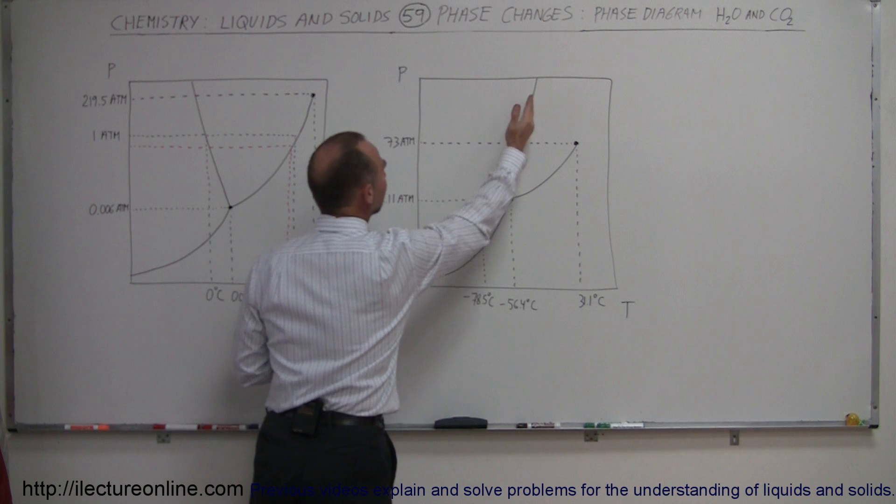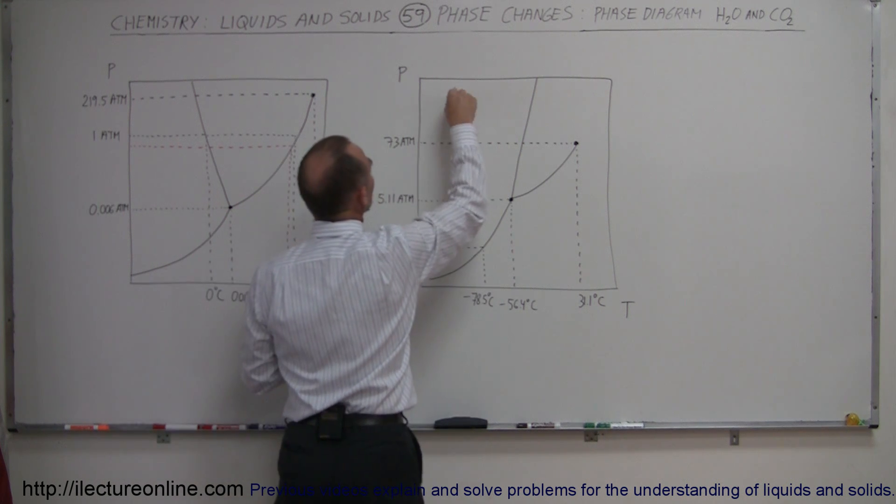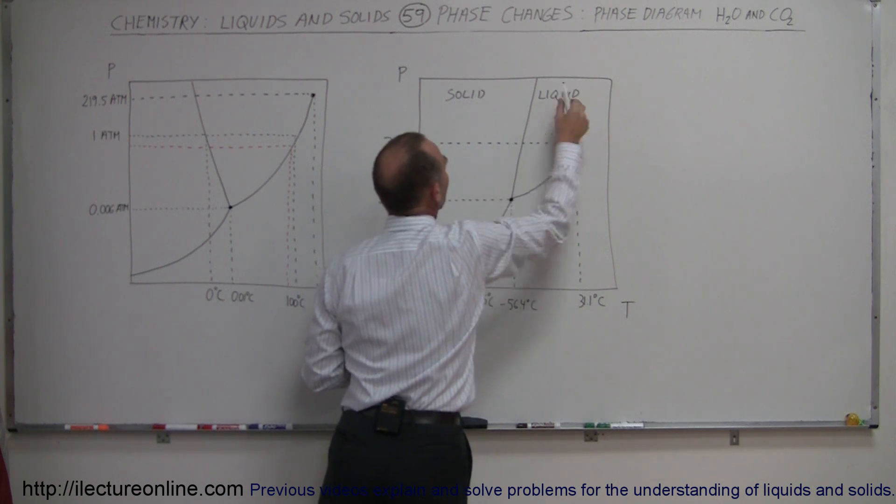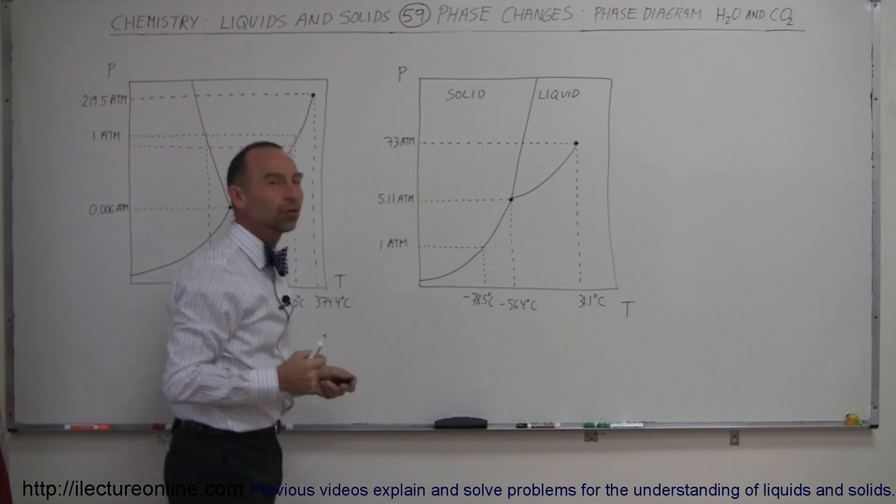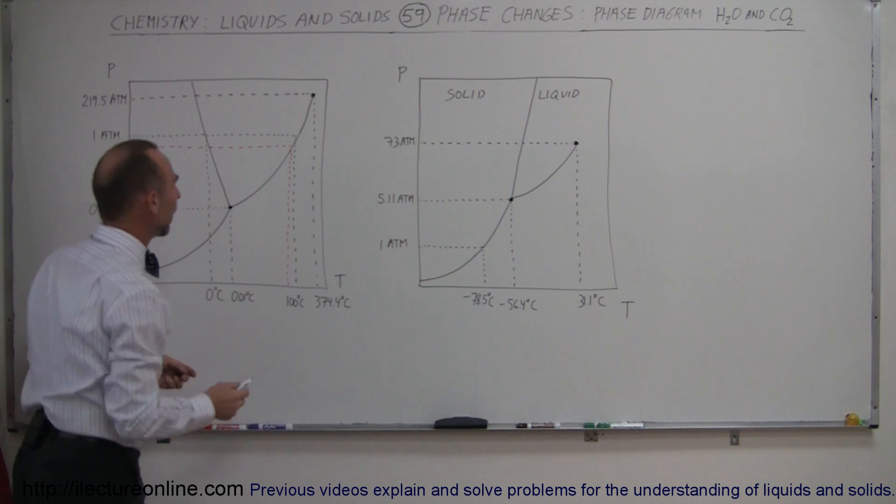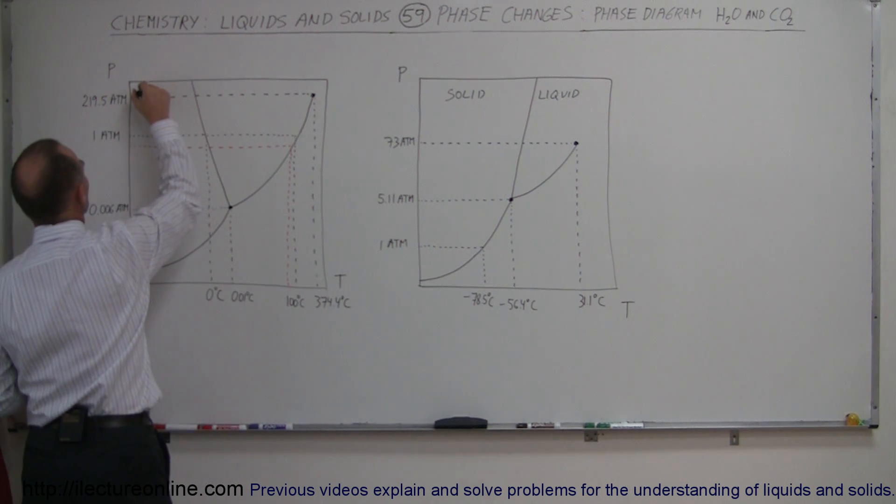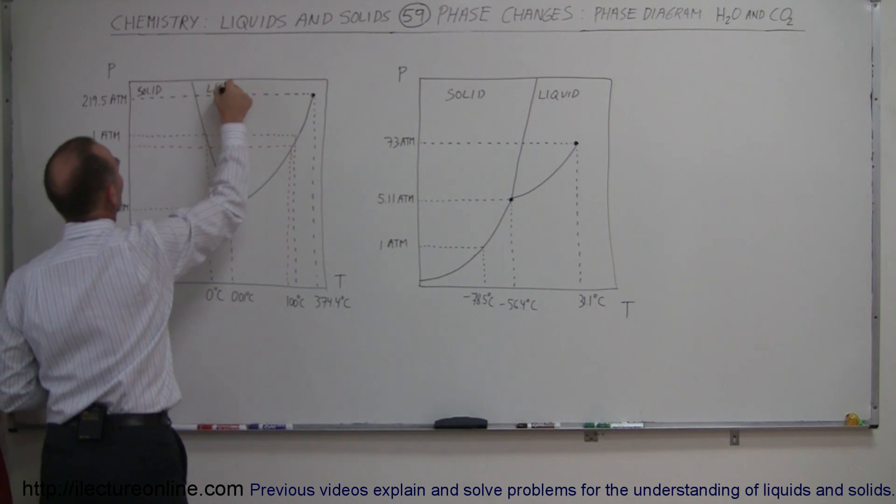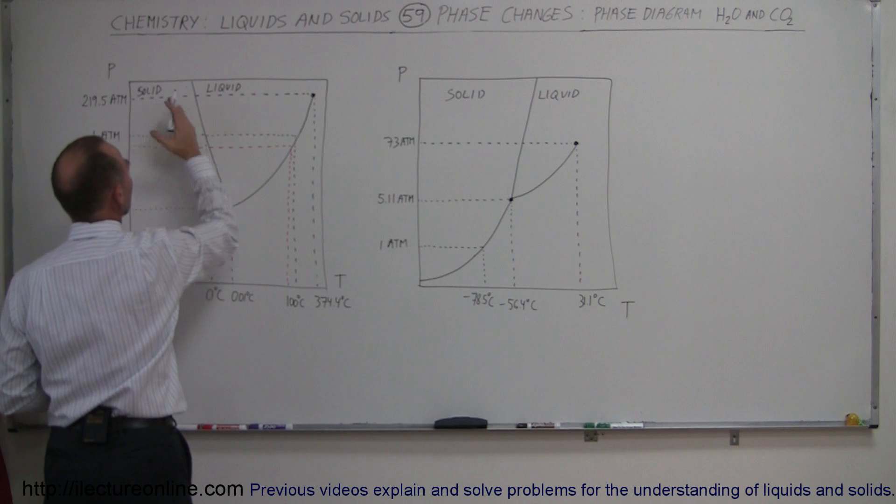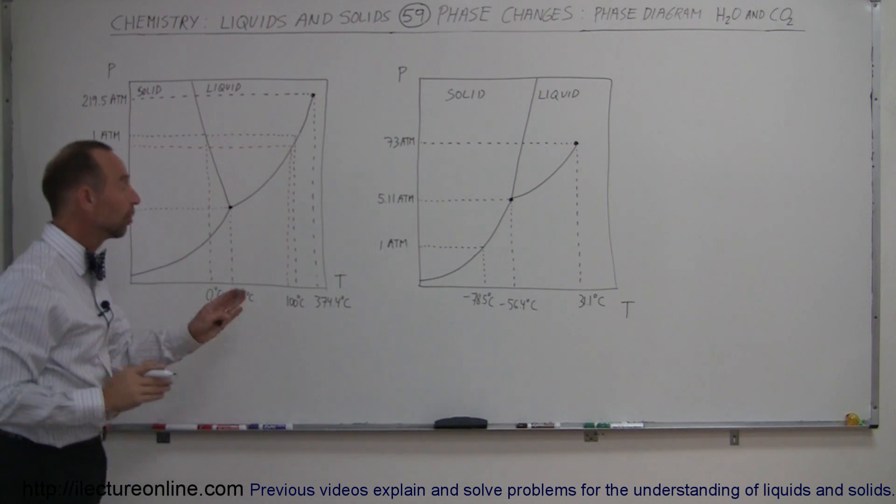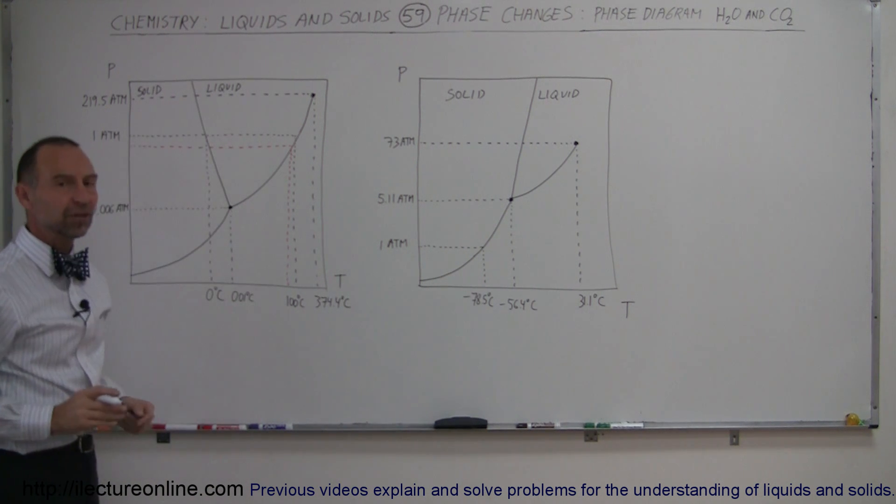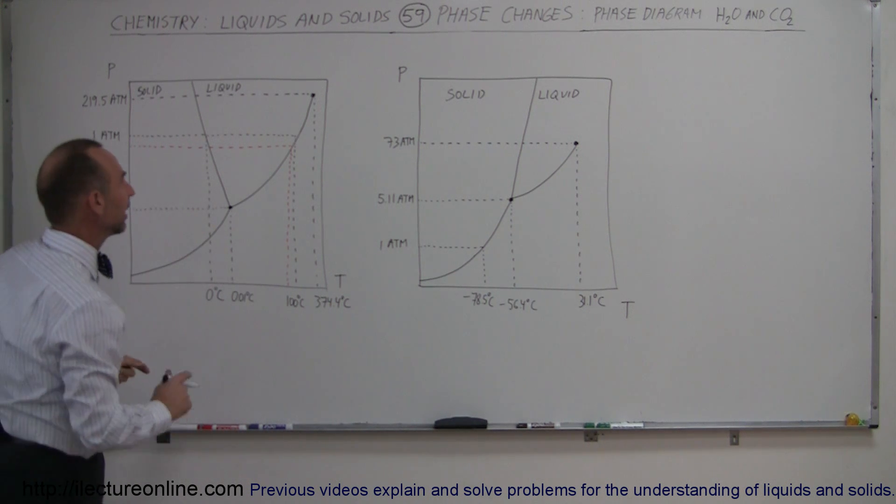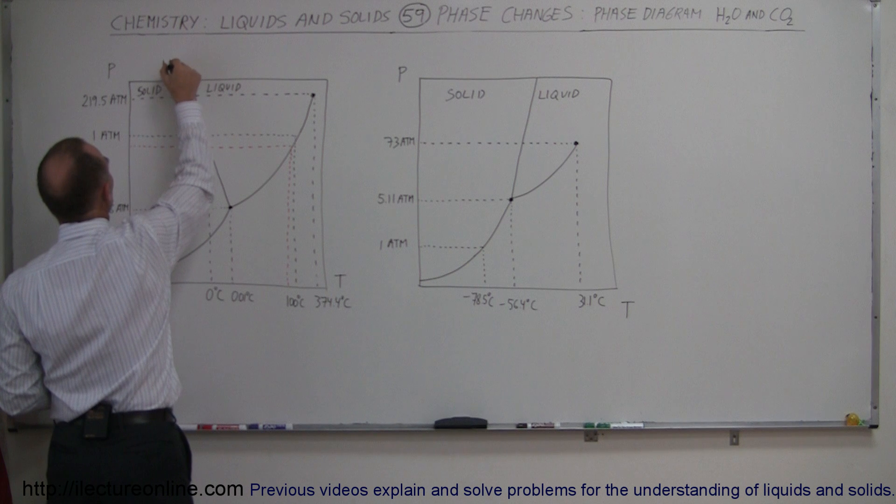On the carbon dioxide, the line that goes between the solid and the liquid is sloped to the right. It has a positive slope. On this one here, we have the solid on the left and we have the liquid to the right. Notice here that the line dividing the solid from the liquid phase is sloped this way. It has a negative slope that is extremely unique.